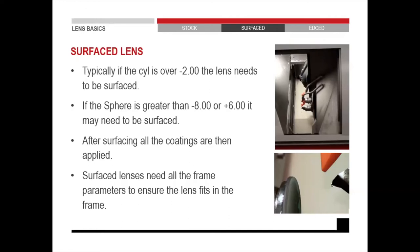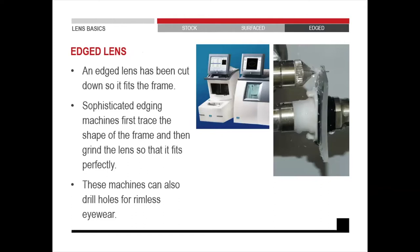After surfacing, all coatings need to be applied. For surface lenses, we also need the frame parameters to make sure the lens being surfaced will fit into the frame with your specific requirements. An etched lens is a lens that has been cut down to fit into the specific frame. Sophisticated edging machines first trace the shape of the frame and then grind the lens so it fits perfectly. These machines can also drill holes for rimless frames — they can handle plastic, metal, nylon or rimless frames.